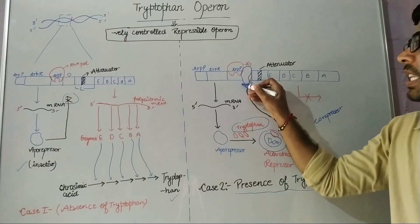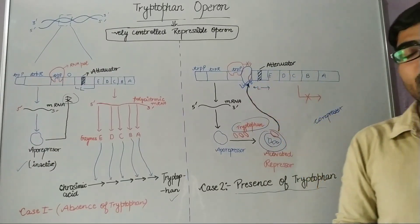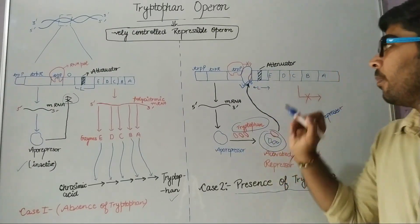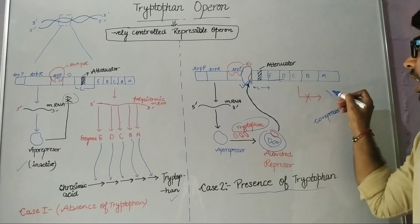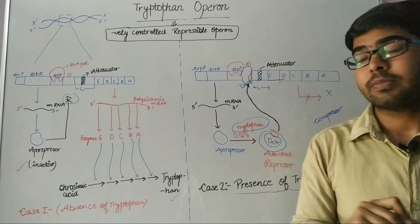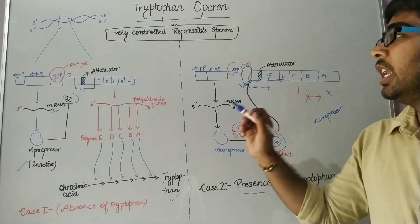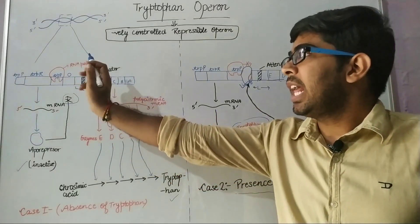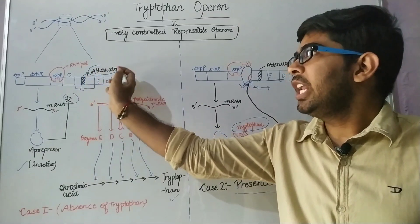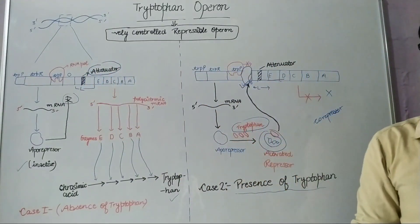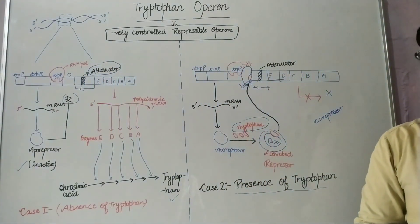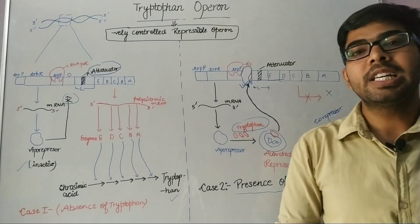The tryptophan promoter gene allows RNA polymerase to bind, but it will not proceed further because of interference by this activated repressor. There will be no expression of structural genes.